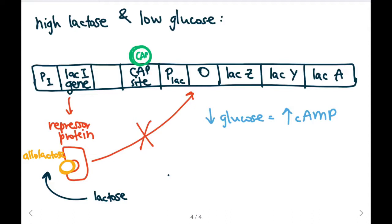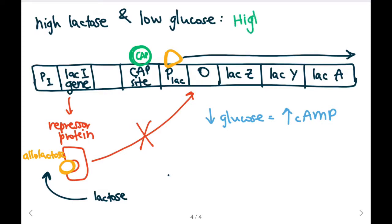This will increase the affinity for RNA polymerase to bind tightly to our promoter of our LAC operon. RNA polymerase will bind tightly, and it will be able to transcribe our three genes because there is no repressor blocking it. Because of this, we're going to have high expression and high transcription of our LAC operon.